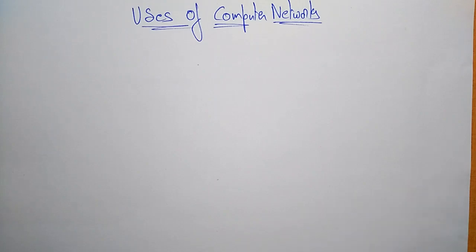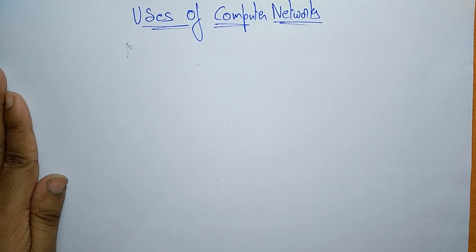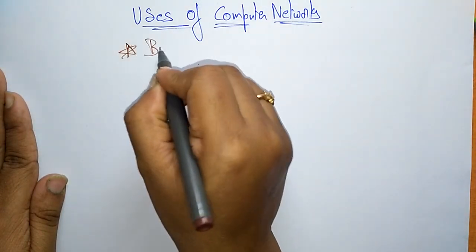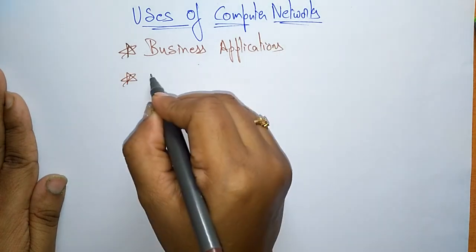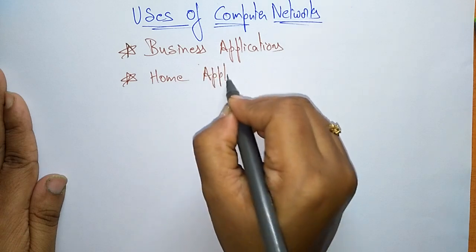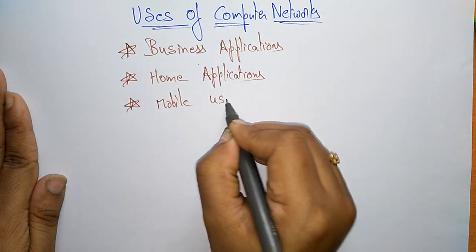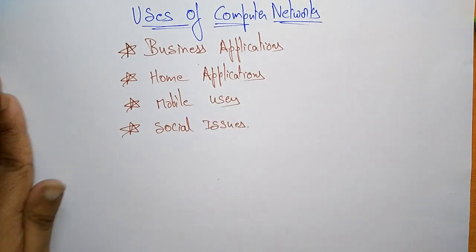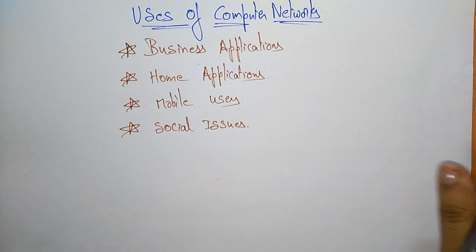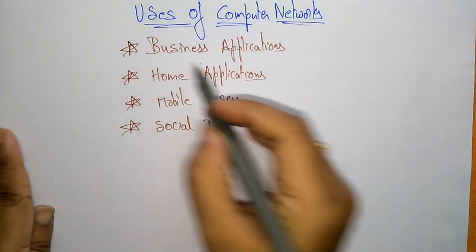Coming to the next topic: the uses of computer networks — in which areas we are using computer networks. A computer network can be used in business applications, home applications, mobile users, and social issues. Nowadays everything depends upon computer networks. Every technology you take, the complete internet is a computer network. Now let us discuss one by one.